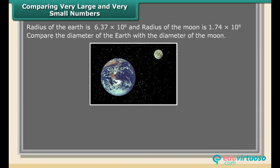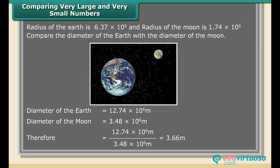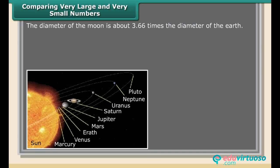Comparing very large and very small numbers: The radius of the earth is 6.37 × 10⁶ m and the radius of the moon is 1.74 × 10⁶ m. Comparing diameters: diameter of earth = 12.74 × 10⁶ m, diameter of moon = 3.48 × 10⁶ m. Therefore 12.74 × 10⁶ / (3.48 × 10⁶) ≈ 3.66. The diameter of the earth is about 3.66 times the diameter of the moon.